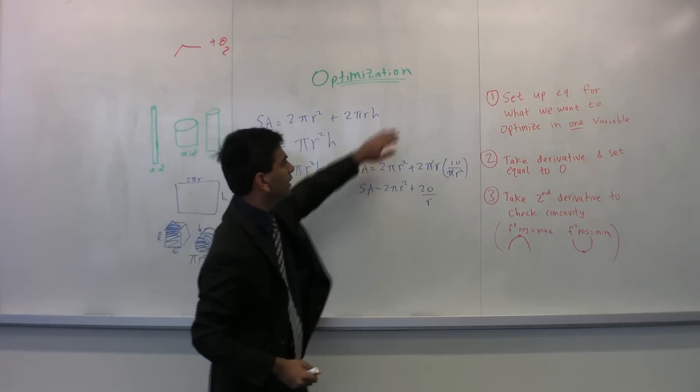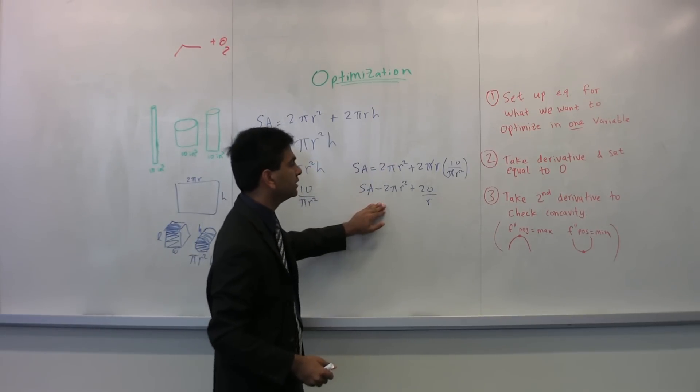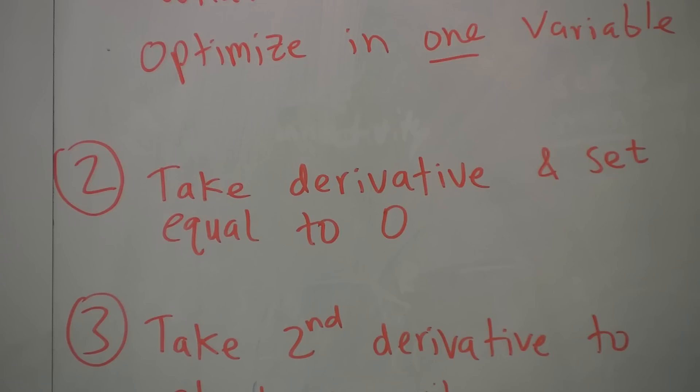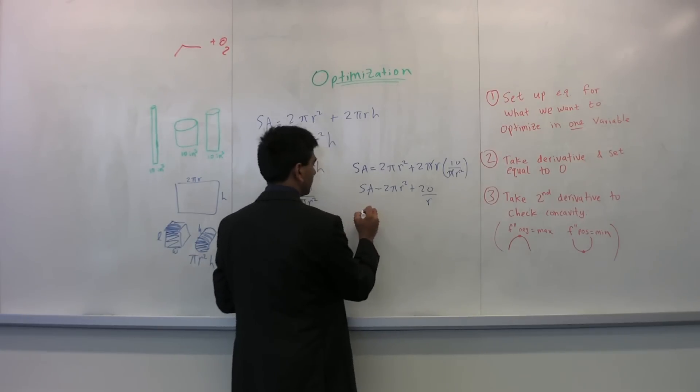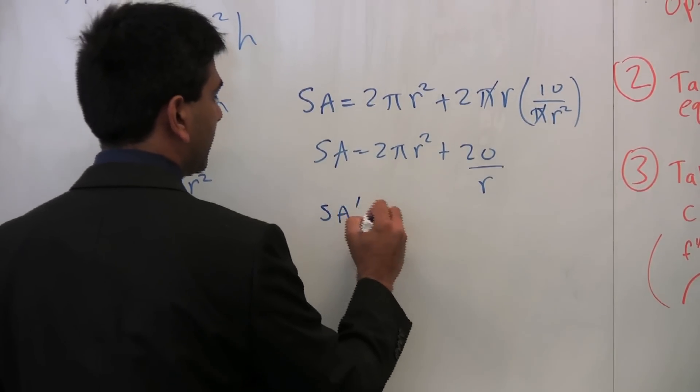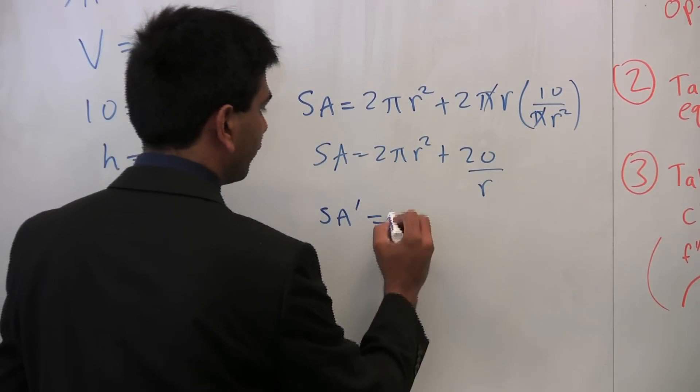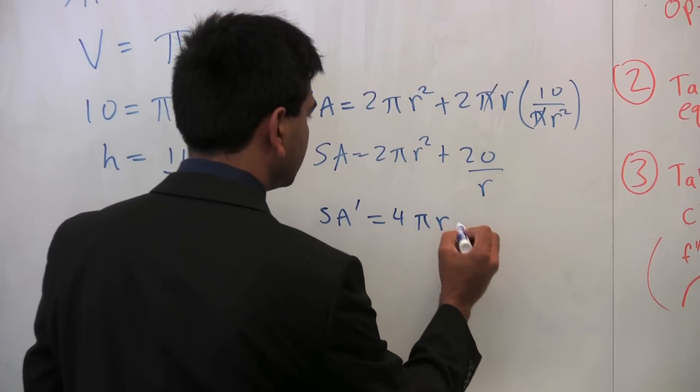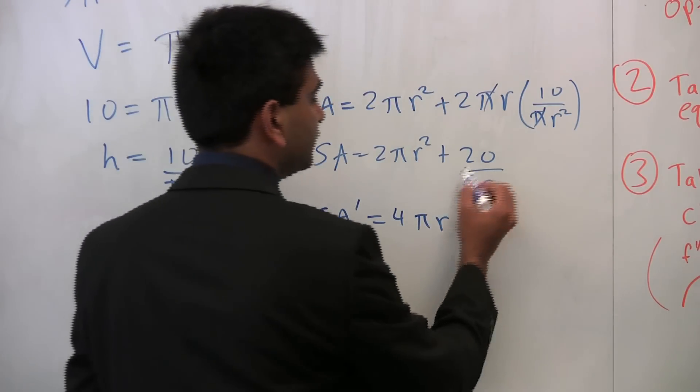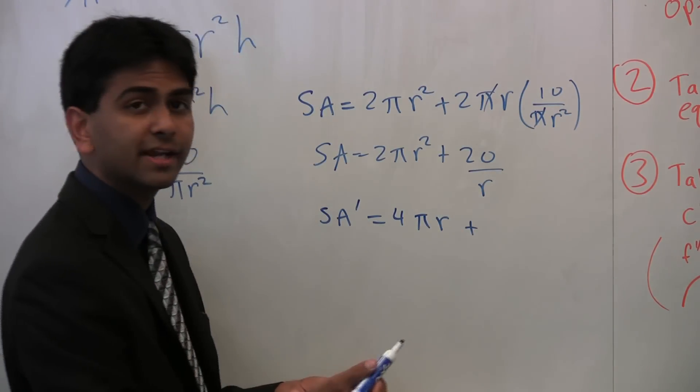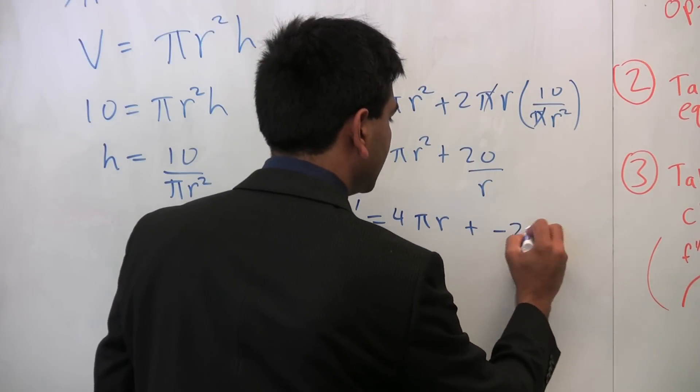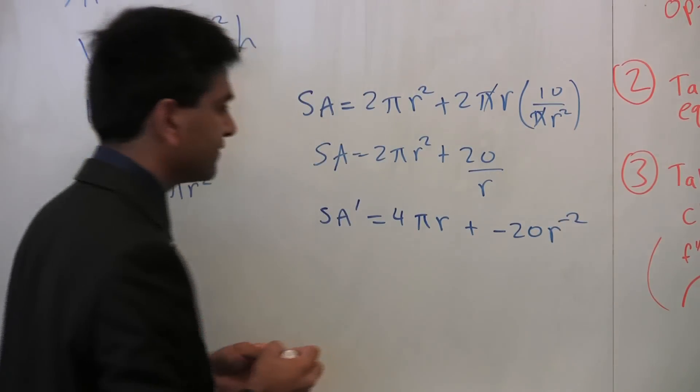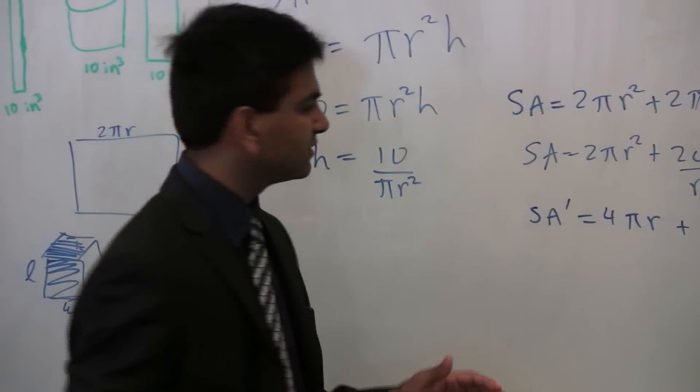So now that we have our nice equation in terms of just one variable, what we have to do is take the derivative and set it equal to zero. This will help us optimize it. So once you take the derivative of this surface area, S a prime is 4 pi r plus, you can again think of this as 20 r to the negative 1, so that's just negative 20 r to the negative 2 now. That's the derivative of that.